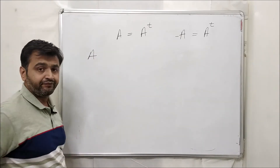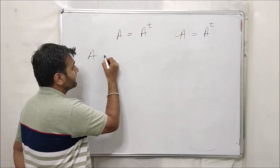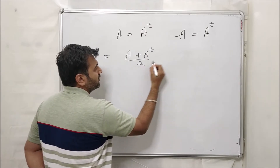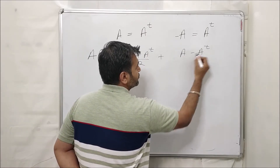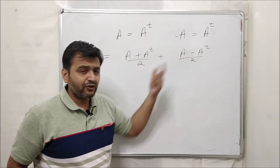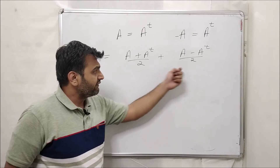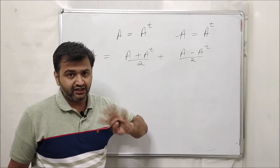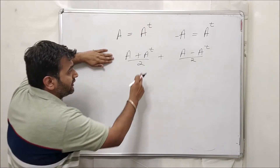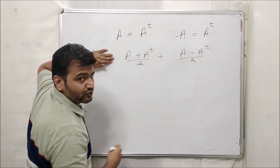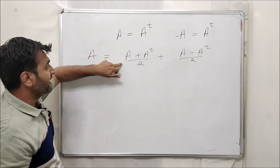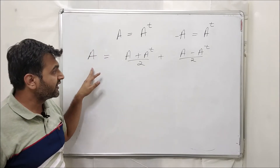Now, given a matrix A, I can rewrite it as (A plus A transpose) over 2, plus (A minus A transpose) over 2. I can always do that — adding and subtracting matrices is fine, and dividing by 2 is fine since we are in real numbers. If you check the right-hand side, the A transposes cancel and 2A divided by 2 gives A, so the identity holds.